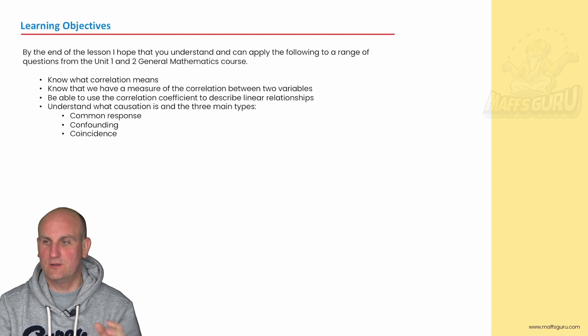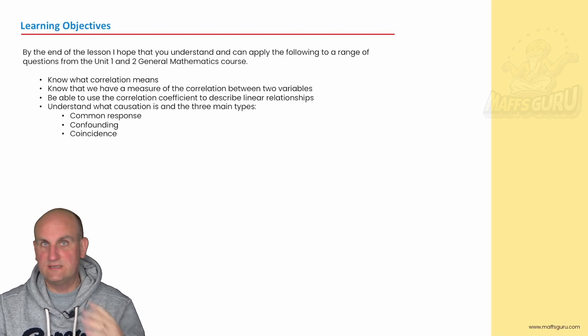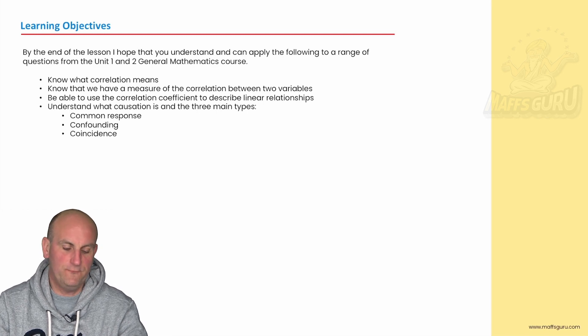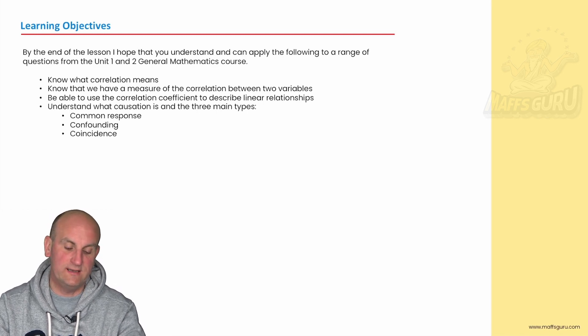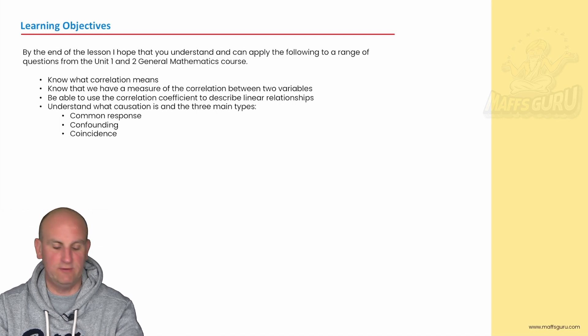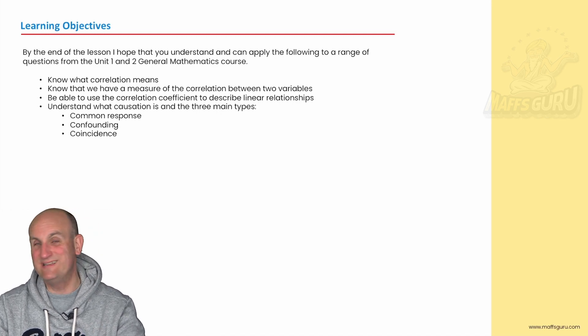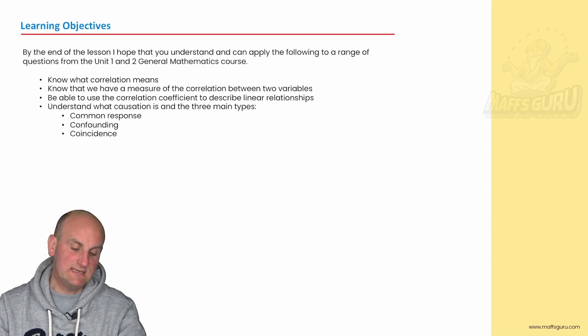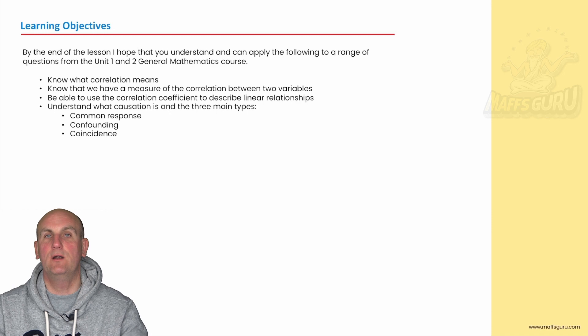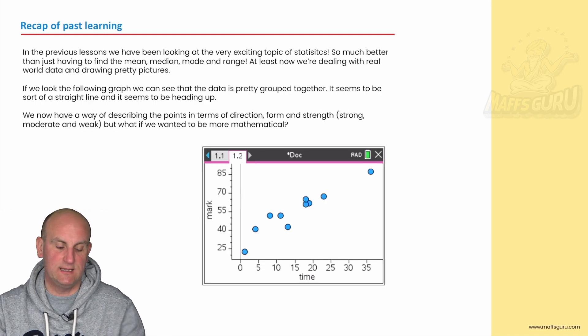Now, what I tend to do is look at the learning objectives, and we're building on the stuff that we have done in previous videos. We want to know what it means by correlation. Hopefully, by the end of this video, we'll know that it is a measure of correlation. Be able to understand the correlation coefficient and use it to describe linear relationships. The important point there is linear relationships. And understand what causation is and the three main types. There's a lot in here, so let's get going.